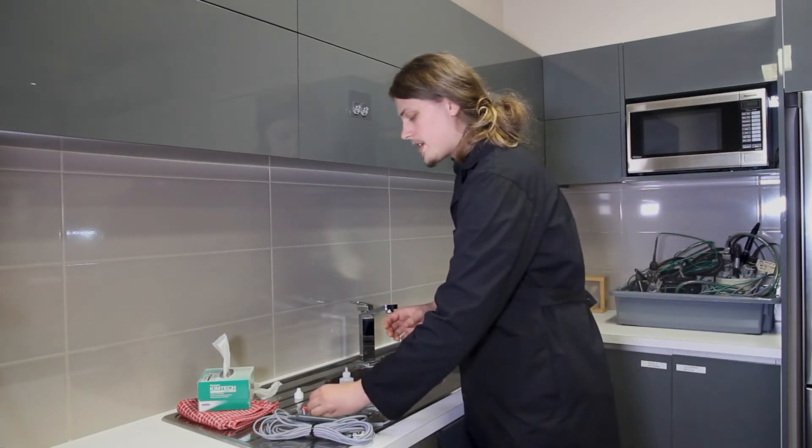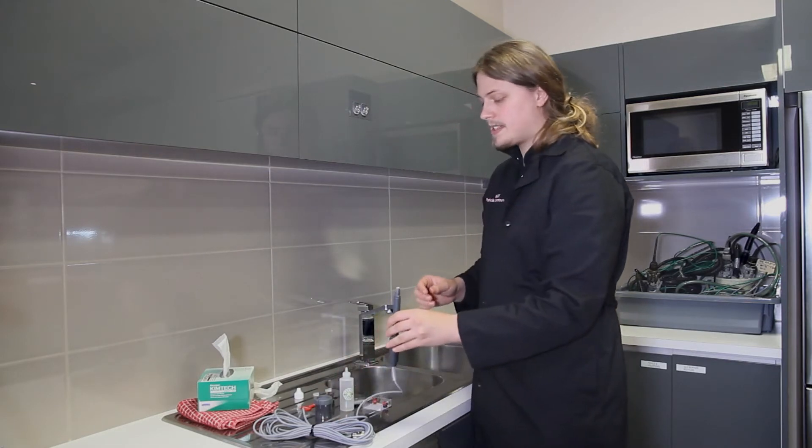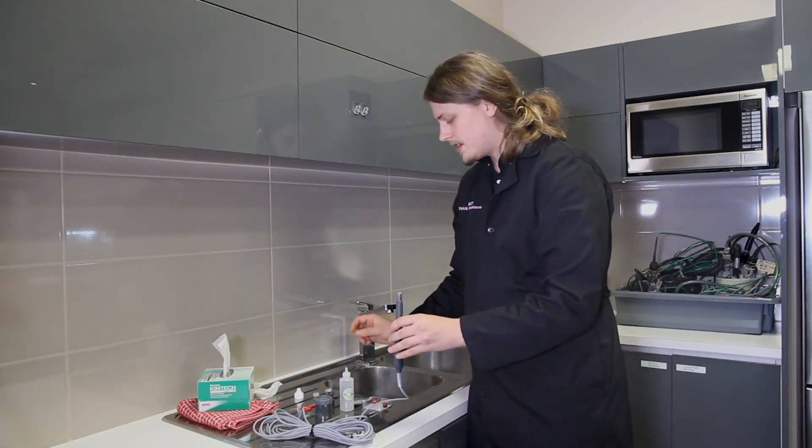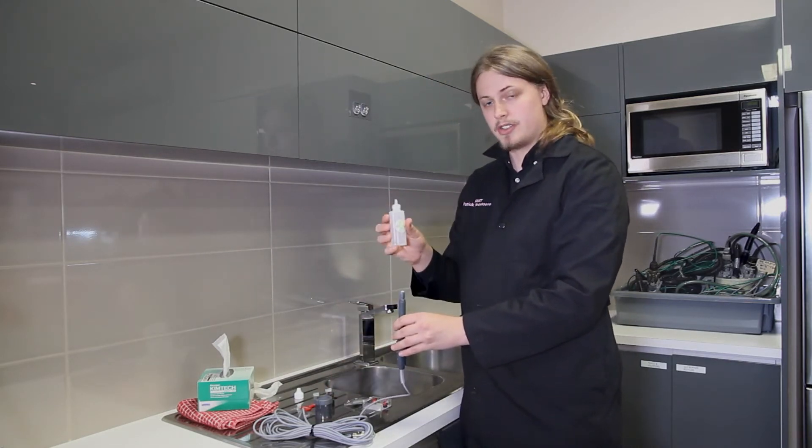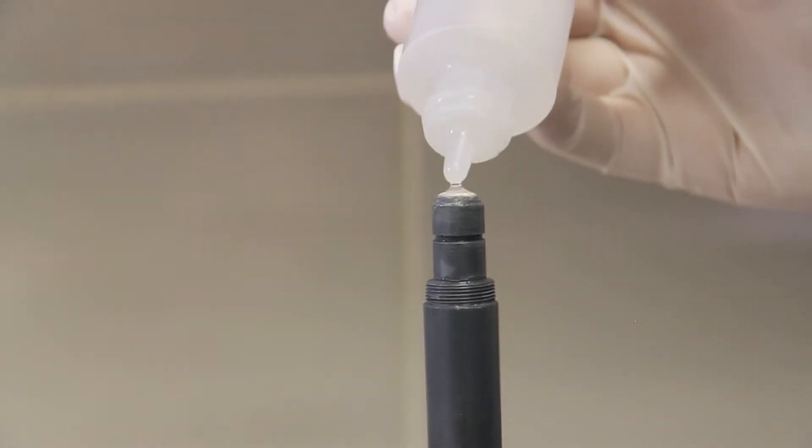Next, take your sensor and hold it face up, straight up in the air. Then take your electrolyte solution and place a single drop on the very tip of the sensor.